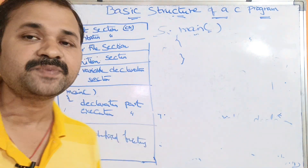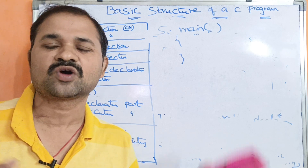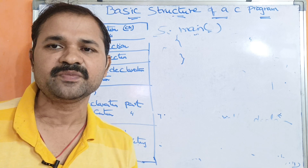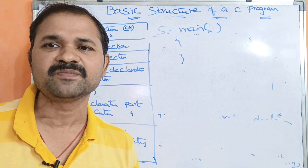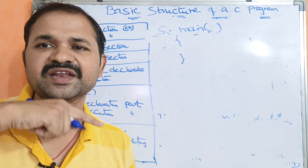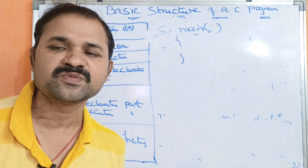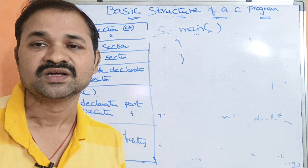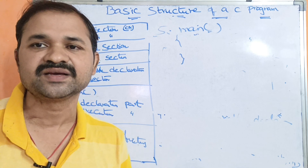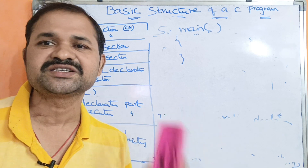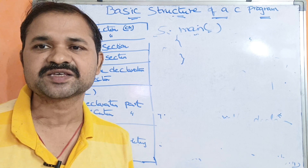In the declaration part, variables are declared. In the execution part, calculations and displaying results are performed. For example, in a program that adds two numbers, the declaration part declares three variables: a, b, and sum. The execution part reads values using scanf with percent a and percent b, calculates sum = a + b, and displays the result using printf.